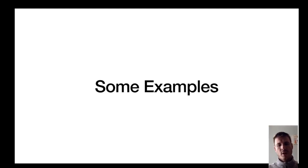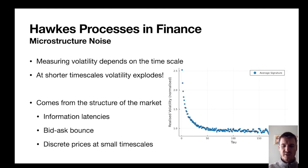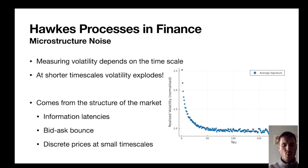Now moving on to examples. Hawkes processes are commonly used in finance, and one way we can use them is to model microstructure noise. This microstructure noise comes from measuring volatility at different timescales. When we move to finer and finer timescales, we find that this volatility explodes and becomes a very large number. I've calculated the realized volatility for a futures contract on the right and we can see that as we move into smaller timescales it gets larger and larger, following this typical exploding pattern. This comes from the underlying market structure: information latencies between participants, the bid-ask bounce, and discrete prices at small timescales, all contributing to price movements that look like volatility at smaller timescales.